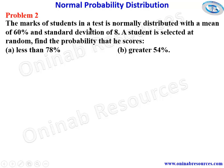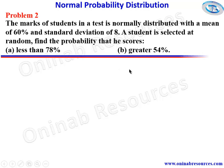Problem 2: the marks of students in a test is normally distributed with a mean of 60 percent and standard deviation of 8. A student is selected at random. Find the probability that he scores: (a) less than 78 percent, and (b) greater than 54 percent. In our solution, we bring out the given parameters: mean = 60 percent and standard deviation = 8.